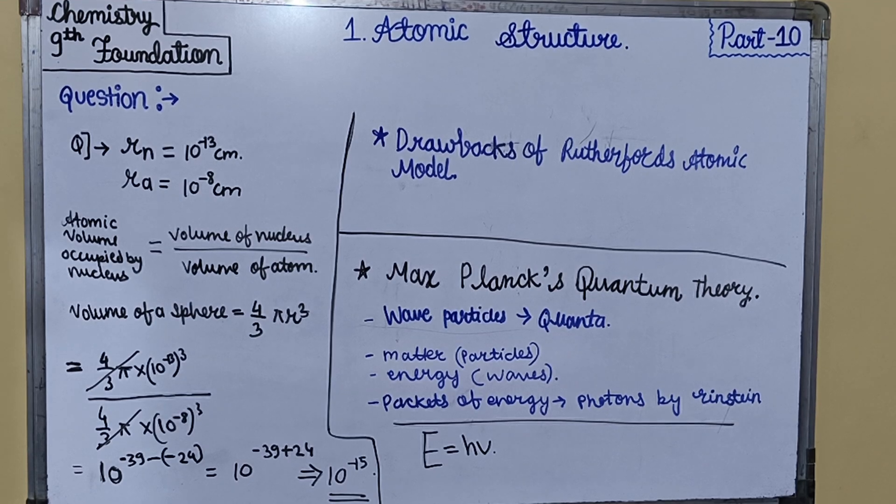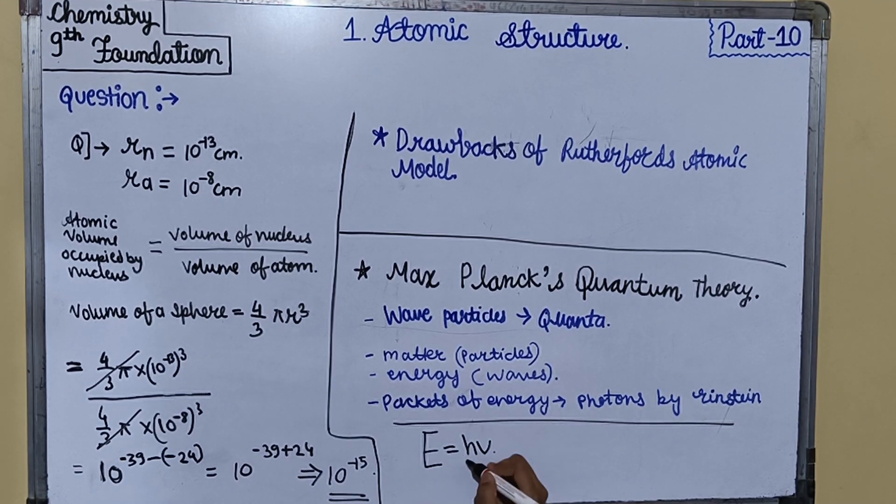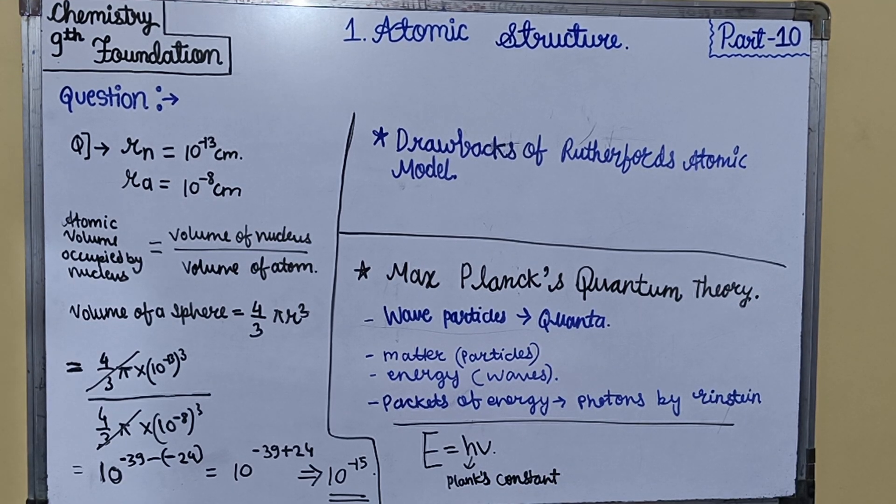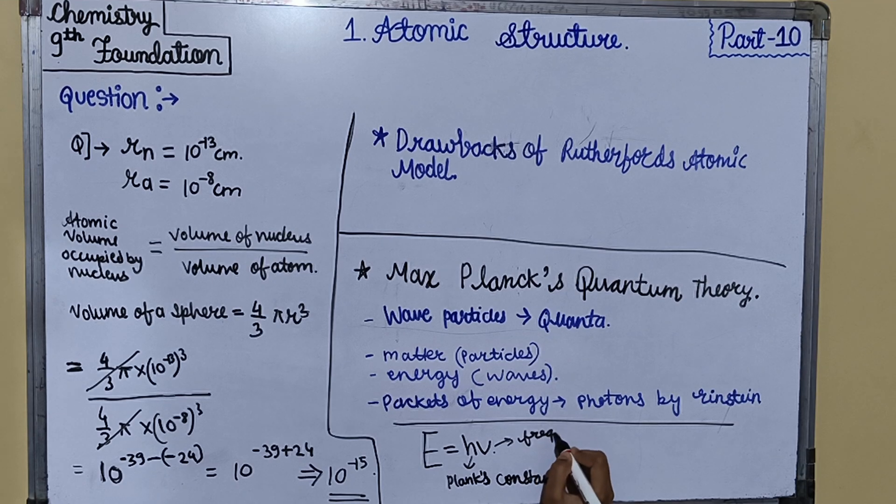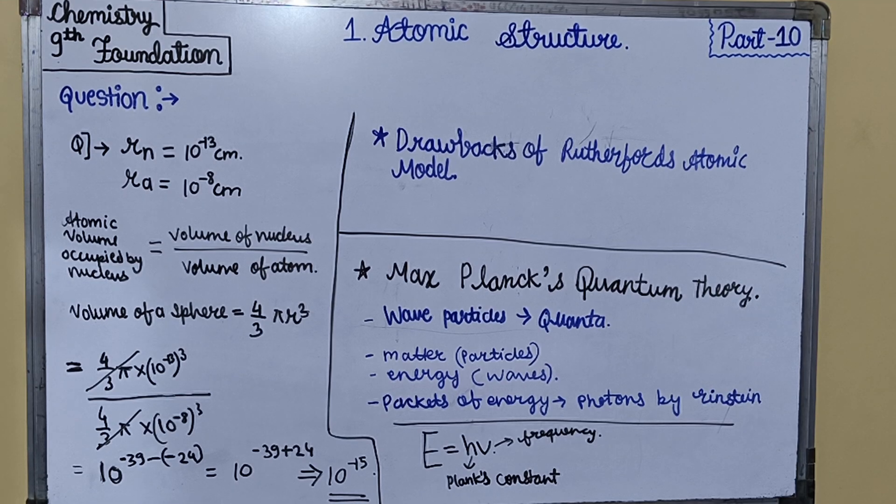Where h is Planck's constant, and ν is the frequency of electromagnetic radiation in which the photon is present. h is Planck's constant, equal to 6.625 × 10⁻³⁴ joule second.